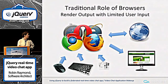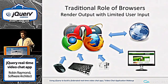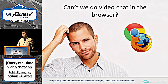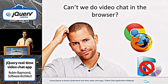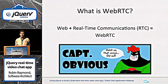Traditionally, browsers take information from the web, render it, and you get input from your keyboard and mouse. You can upload a file, but they've never really been able to do anything with your microphone or camera — mostly because you wouldn't want to be browsing the web and suddenly your camera comes on and you're being filmed or spied upon. Someone had the clever idea: why can't we do this within the browser without having to install some crazy software or plug-in? And thus, the idea of WebRTC was born — basically the marriage of web and real-time communications.